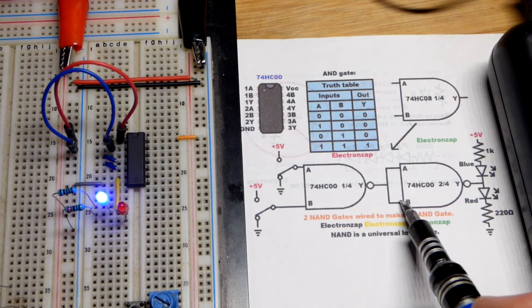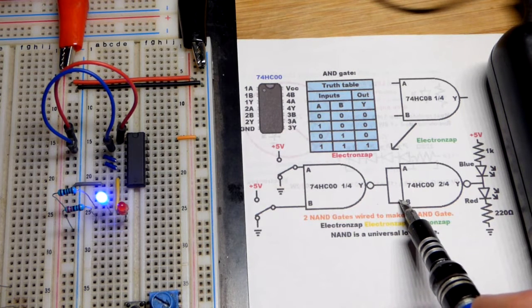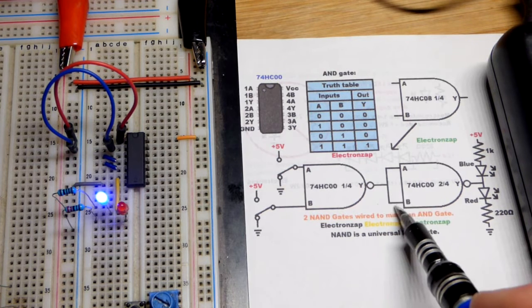Since we have A and B tied together, that's both of the inputs, so if one of them is high, both of them are high. If one of them is low, then both of them are low.